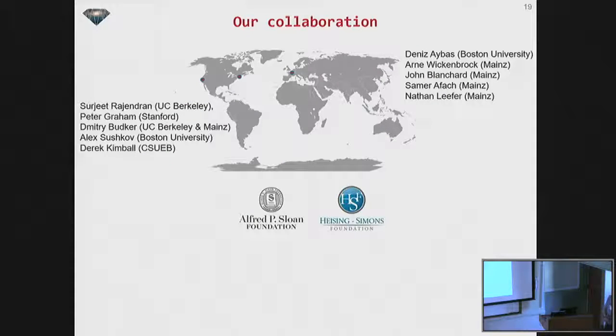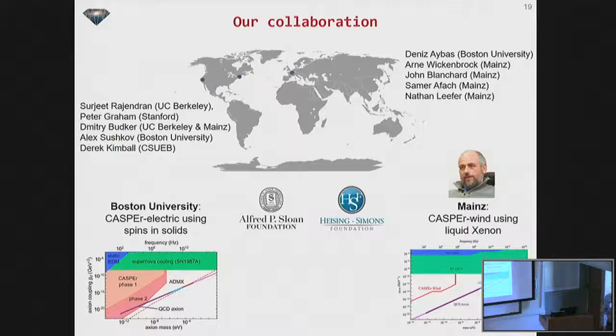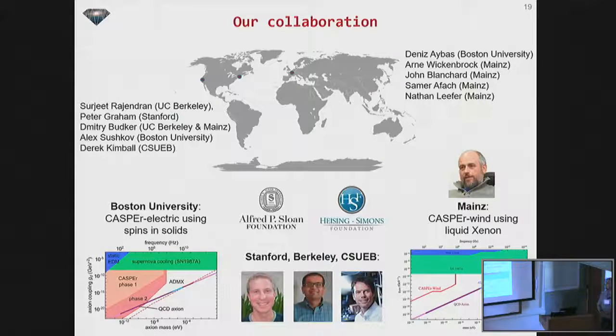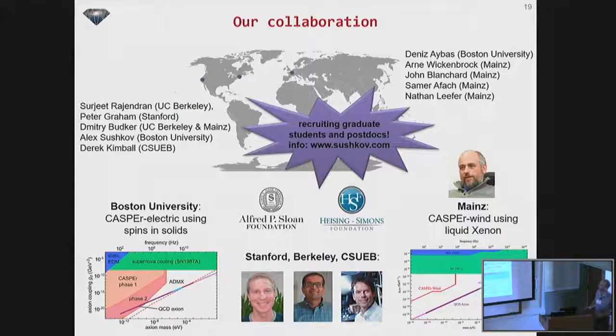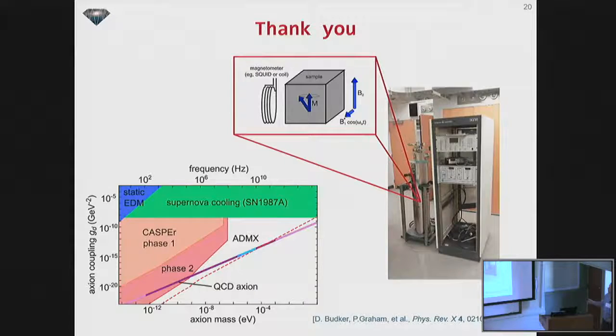So our collaboration is several institutions around the world. And they're shown by these dots up here. And basically the experimental efforts are concentrated at Boston University where we're searching, where we're doing this Casper electric experiment using the spins and solids that I talked about. And there's an experimental effort at Mainz led by Dima Butker, where the search is for the Casper wind coupling. So the gradient coupling and those guys are using liquid xenon. And this is their exclusion parameter plot. And of course, we have invaluable support from the guys on the West Coast in California. And the next speaker is shown right here. So I want to acknowledge everyone here. And of course, recruiting graduate students, postdocs. So if anyone's interested in this experiment, let me know. So here is again the picture of the experimental setup. Here is our experimental reach. And thank you very much for your attention.